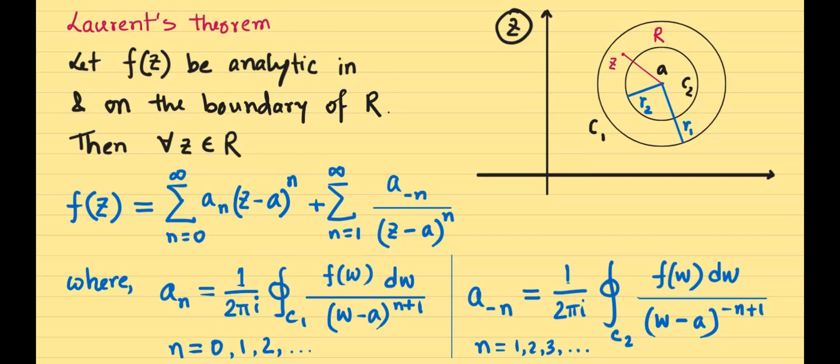This is the statement of the theorem. Let f be a function which is defined on the complex plane, specifically in a region in which we are interested in understanding the function, and that region is called R. This function f is analytic, that means f satisfies number one, Cauchy-Riemann equations, and number two, all the partial derivatives of f are continuous, which makes up the necessary and sufficient conditions for a function to be analytic.